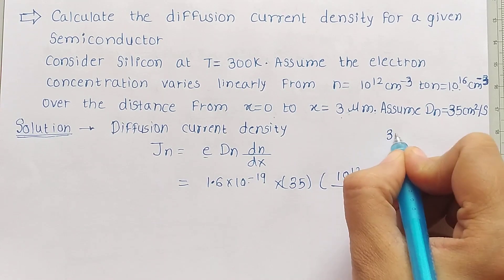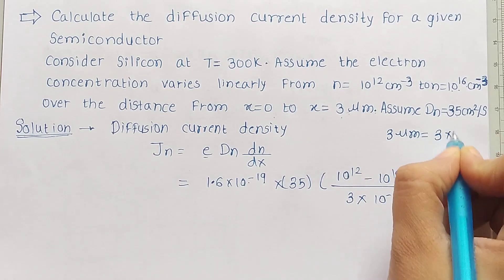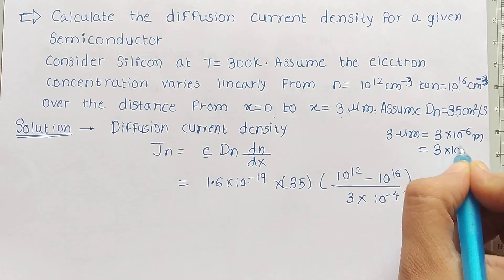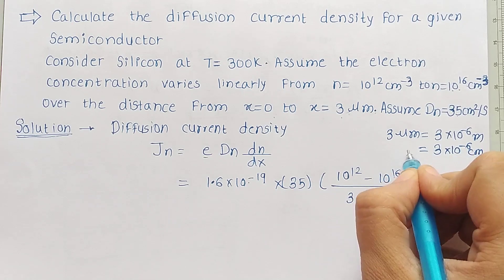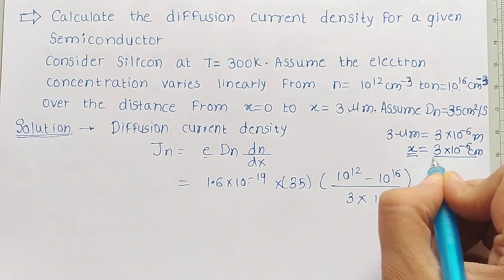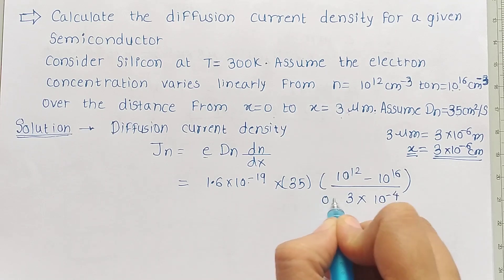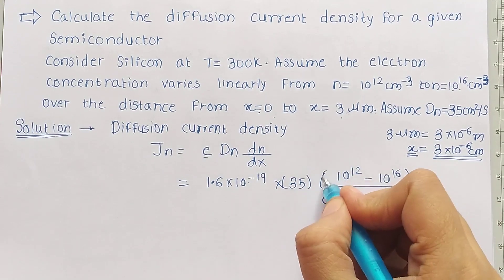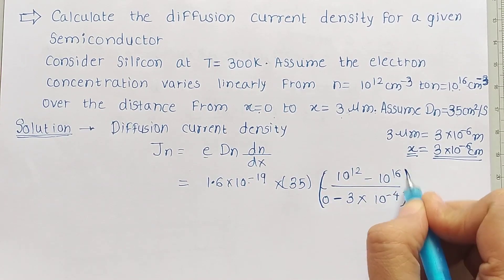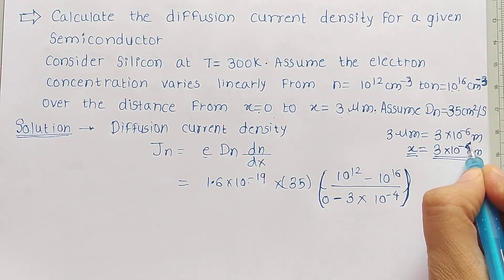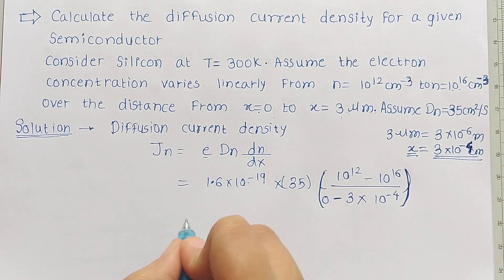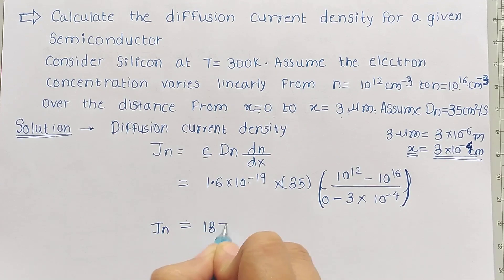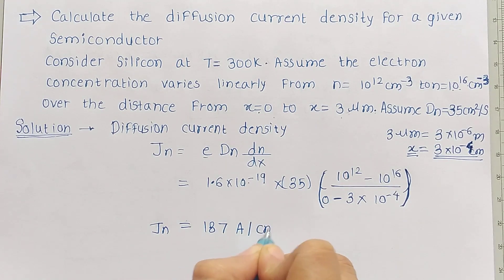So, 3 micrometers is equal to 3 into 10 to the power minus 6 meters. Since 1 meter is 100 centimeters, that gives us 3 into 10 to the power minus 4 centimeters. This is our dx value. Now putting all values into the formula for dn/dx, and solving, we get Jn equal to 187 amperes per centimeter squared.